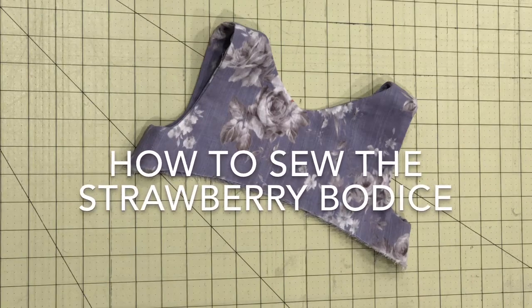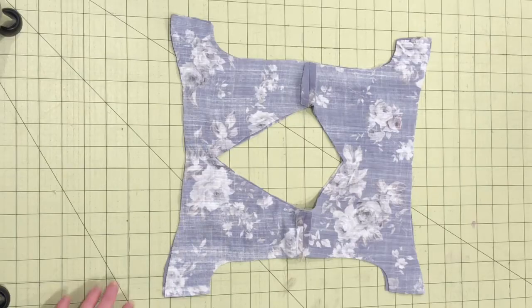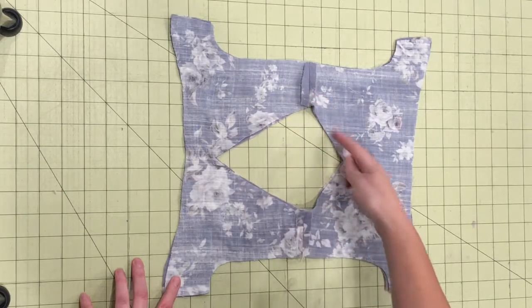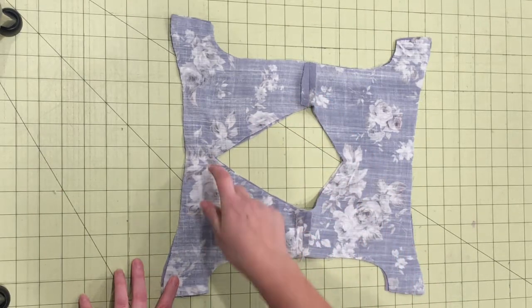I'm going to show you how to sew the strawberry baby doll bodice. To start with your bodice pieces, right sides together, sew along the neckline.